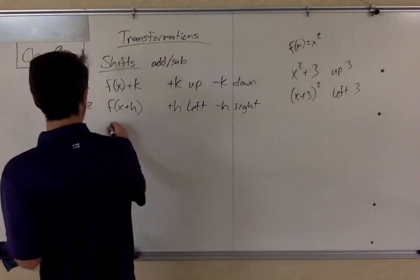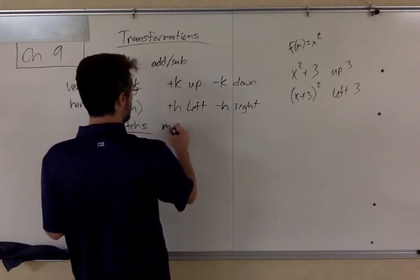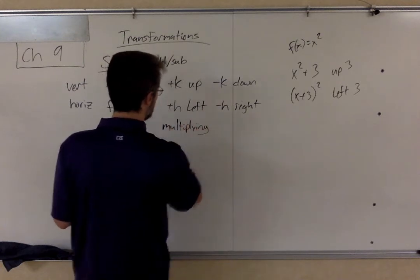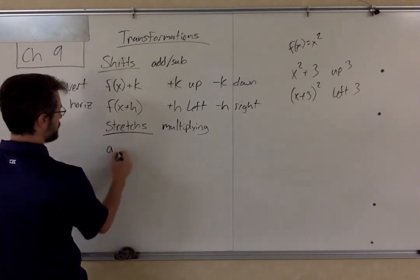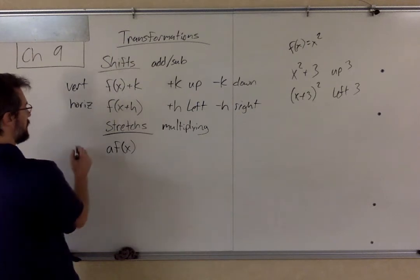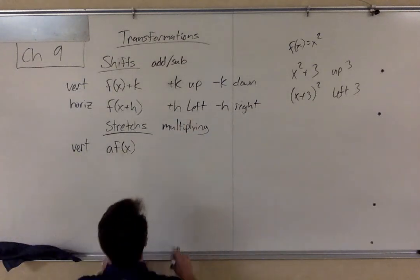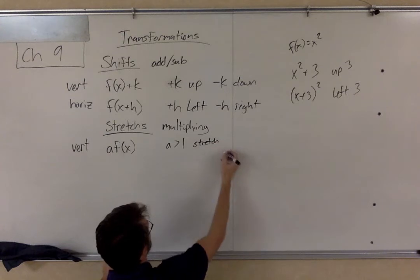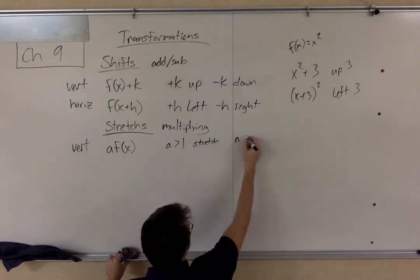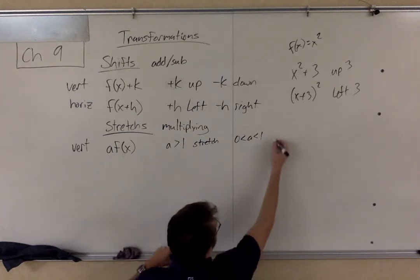Alright, so the next one that we did were stretches, stretches or compressions. This is if you are multiplying. And now the same basic rules apply for vertical versus horizontal. If we are multiplying on the outside of the parentheses and the outside of the grouping symbol, that is going to be a vertical stretch. Now our rules get a little more complicated than this, but not too bad. If A is greater than 1, it is a stretch. But if A is between 1 and 0, so it's greater than 0, but it's less than 1. So numbers like 1 half, 0.4, stuff like that, that is a compression.